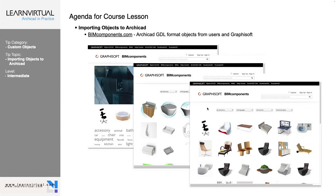Graphisoft has quite a few outside libraries that are compatible with ARCHICAD. The first one is a Graphisoft external library called BIM Components. This has a large variety of different objects that have been built for ARCHICAD that we can download and put into our embedded library. We would get to that at bimcomponents.com.